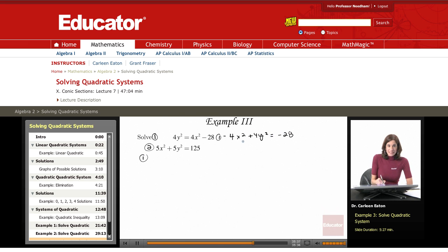I'm going to divide this by 4. Divide both sides by the common factor of 4. That's going to give me negative x squared plus y squared equals negative 7.